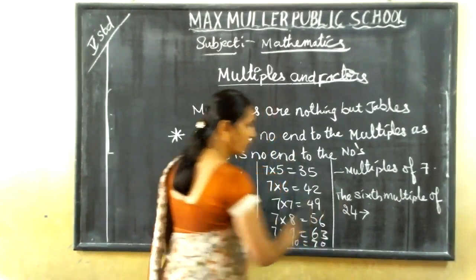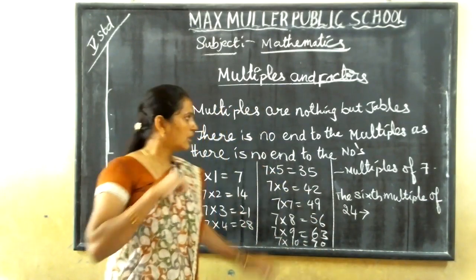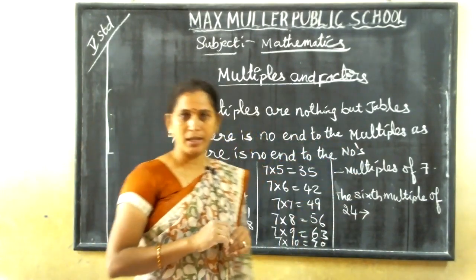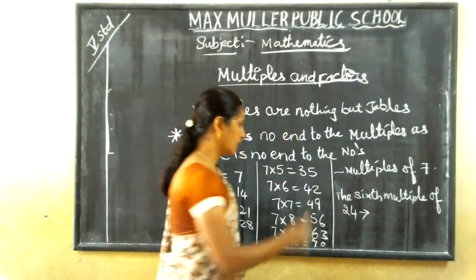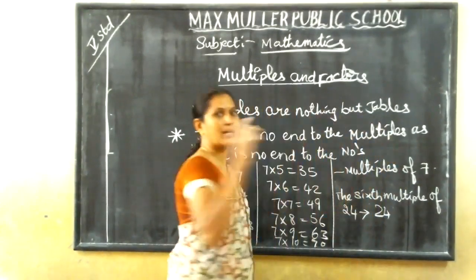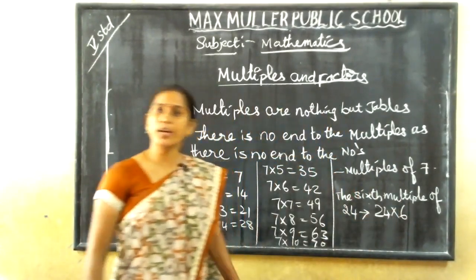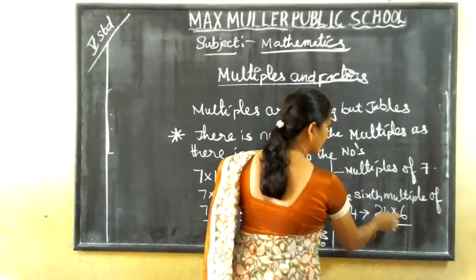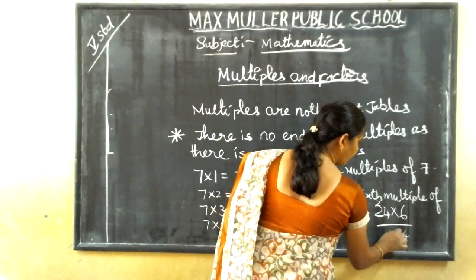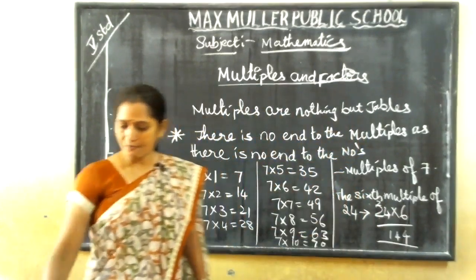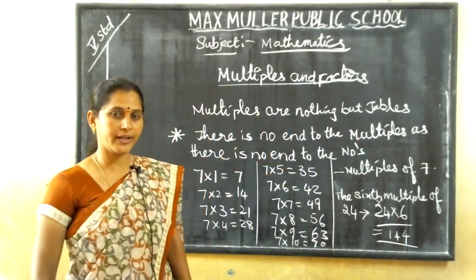For example: the sixth multiple of twenty-four. You might get a doubt — madam has taught only some multiples of seven. How to write the sixth multiple of twenty-four? That is nothing but tables — you have to write twenty-four into six. Twenty-four multiplied by six: six fours are twenty-four, six twos are twelve plus two — so the answer is one hundred and forty-four.